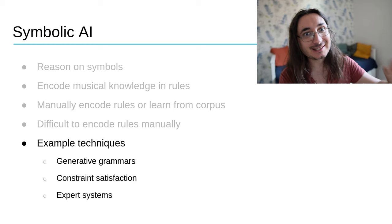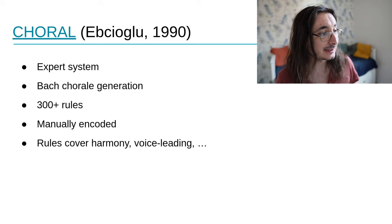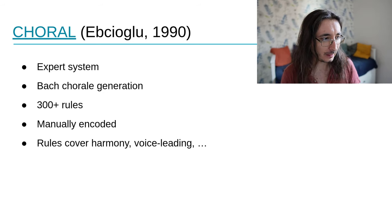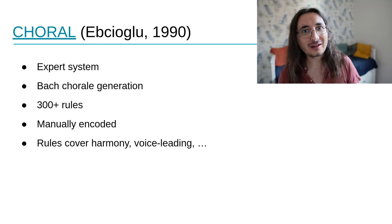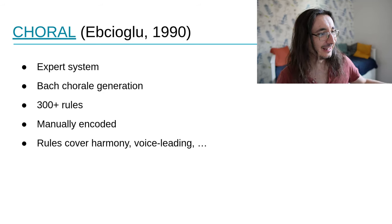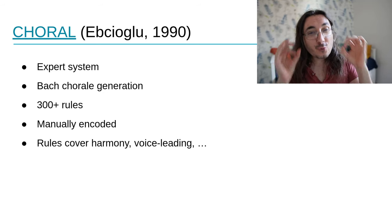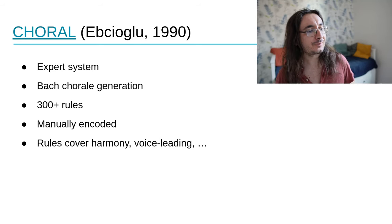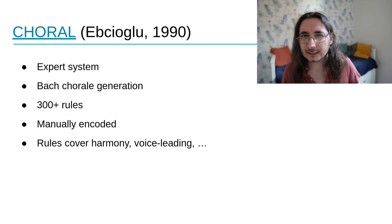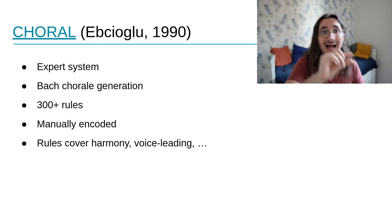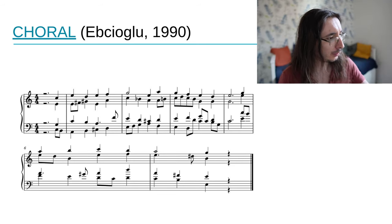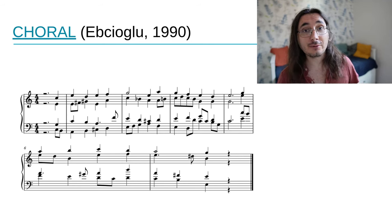Let me show you an amazing system from the late 80s and early 90s called Chorale, invented by Ebcioglu. It generates Bach chorales and is an expert system with more than 300 rules, all manually identified and encoded. These rules cover all sorts of things, but mainly harmony and voice leading — voice leading being that aspect of music covering how you move melodies and melodic ideas. Here's an example of a chorale in the style of Bach generated by Chorale. Let's listen.